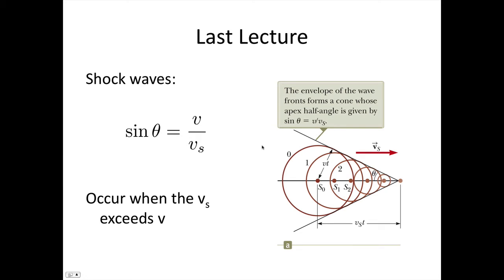And we also saw shock waves happen when a source starts moving faster than the velocity of sound or the velocity of the waves in that medium. In that case, the source overtakes the sound waves that it emits and we get a shock wave generated. Sine theta of this angle here is given by v over vs, and vs over v, the velocity of the source divided by the velocity of the wave, is equal to the Mach number.